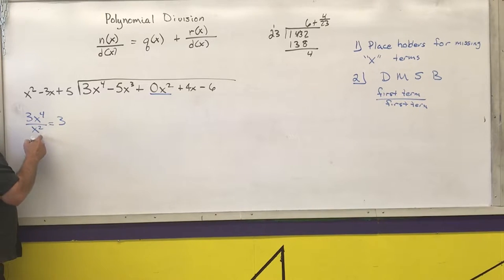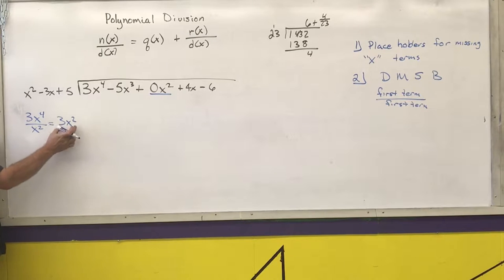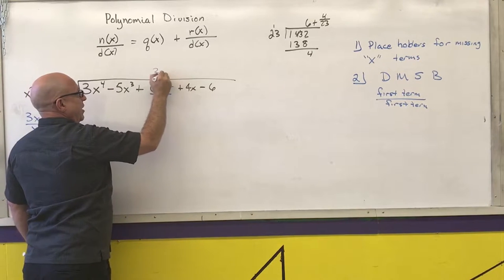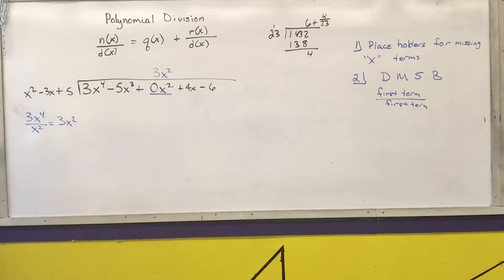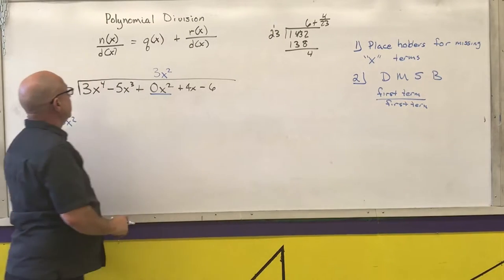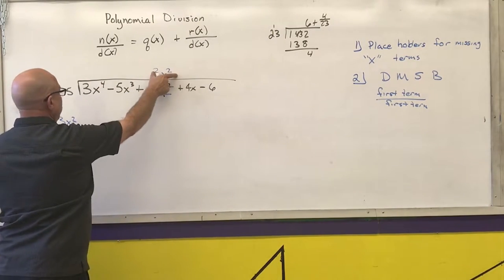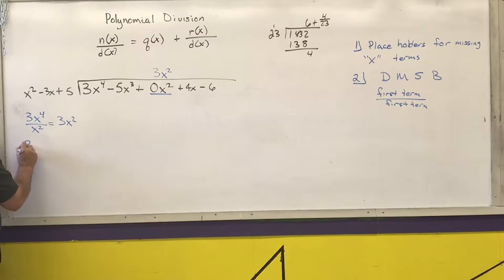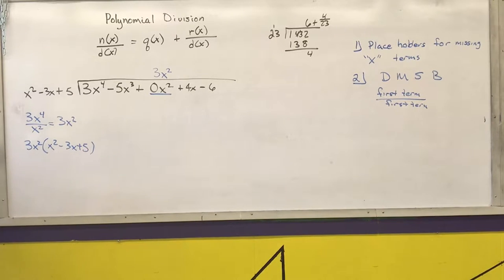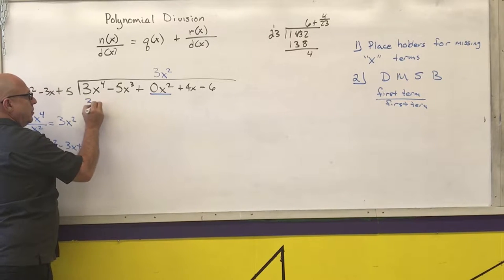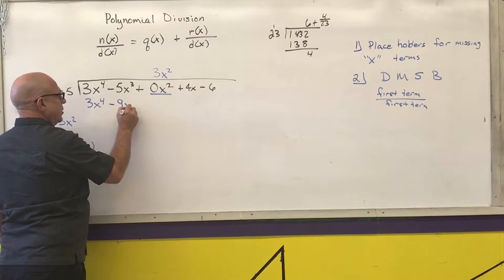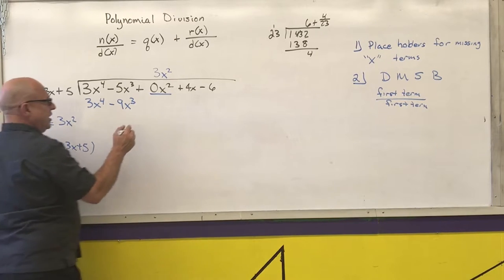For the divide step, I take the first term 3x to the fourth divided by the first term x squared, which gives 3x squared. I put this answer over the corresponding x squared column. Now I multiply: 3x squared times x squared is 3x to the fourth, 3x squared times negative 3x is negative 9x cubed, and 3x squared times 5 is 15x squared.